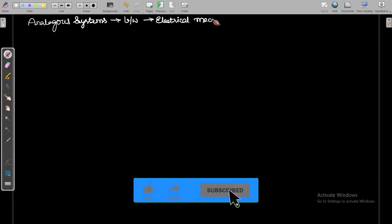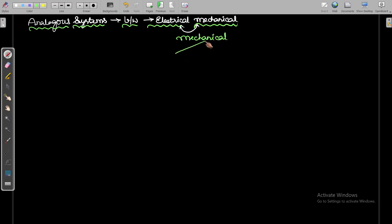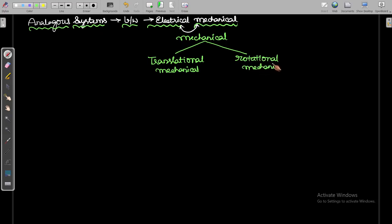We are going to see what are the analogous components we can compare — electrical to mechanical — and you can convert mechanical to electrical. In mechanical systems we already know there are two types: one is translational mechanical systems, another is rotational mechanical systems.